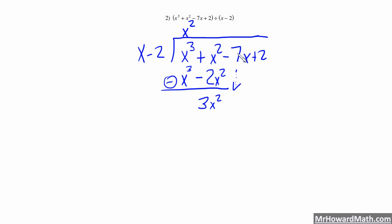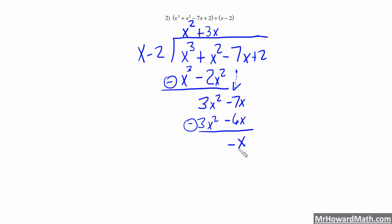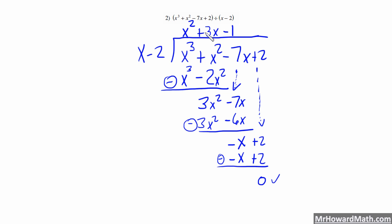We bring down this negative 7x. Now what times x would give us 3x squared? Well, that's a plus 3x, giving us 3x squared. And then 3x times negative 2 is negative 6x. We are subtracting, so these cancel. Negative 7x plus 6x is negative 1x. We bring down that 2. What times x would give us negative x? Well, that's minus 1. So negative 1 times x is negative x, and negative 1 times negative 2 is plus 2. So we get a remainder of 0. Our answer is x squared plus 3x minus 1.